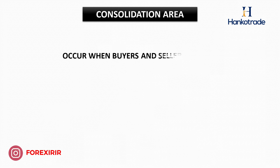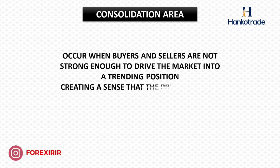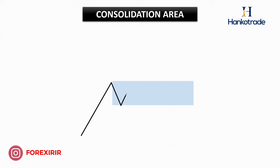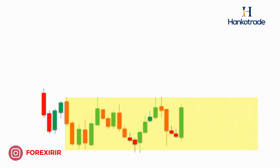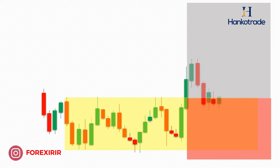The final important supply and demand zone is the consolidation area. Consolidation areas form when both buyers and sellers lack the strength to push the market into a clear trend, creating a feeling that the price is stuck within a range. This situation continues as liquidity gathers, eventually resulting in a breakout in one direction. At that point, the consolidation area transforms into a crucial supply or demand zone for traders. However, it's important to note that we still require some level of imbalance before considering this area valid. For instance, here the price was consolidating during the Asian session before the London market's liquidity entered. This consolidation area then becomes an excellent demand zone for seeking long trading opportunities. We protect our trade with a stop above this zone and can set multiple targets.